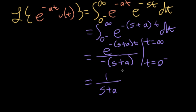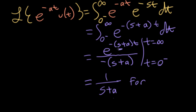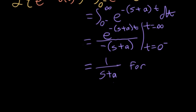This does look a lot like the Fourier transform — if you plugged in j omega here, put a pin in that. That does not always work, and we'll come back to what, when, and why a little bit later. But there's a huge caveat here: this is only valid for particular values of s. So let's think about that a little bit more.